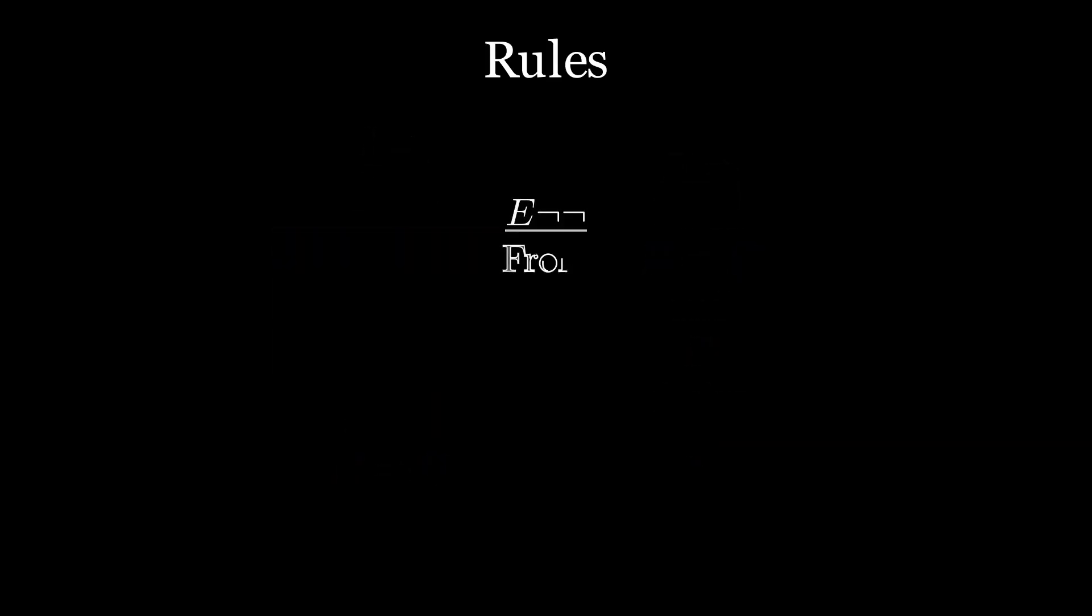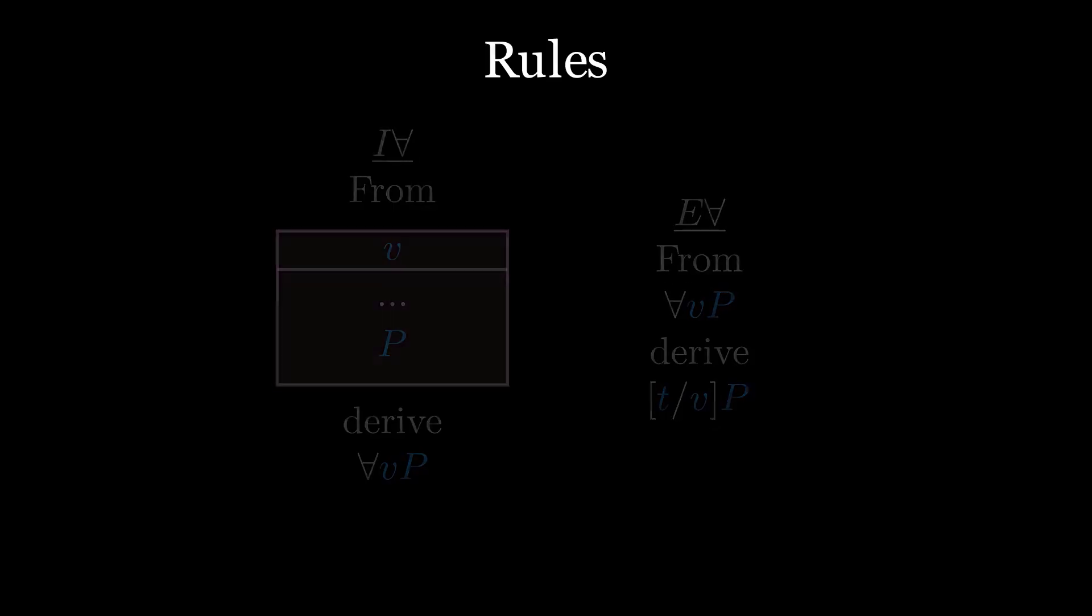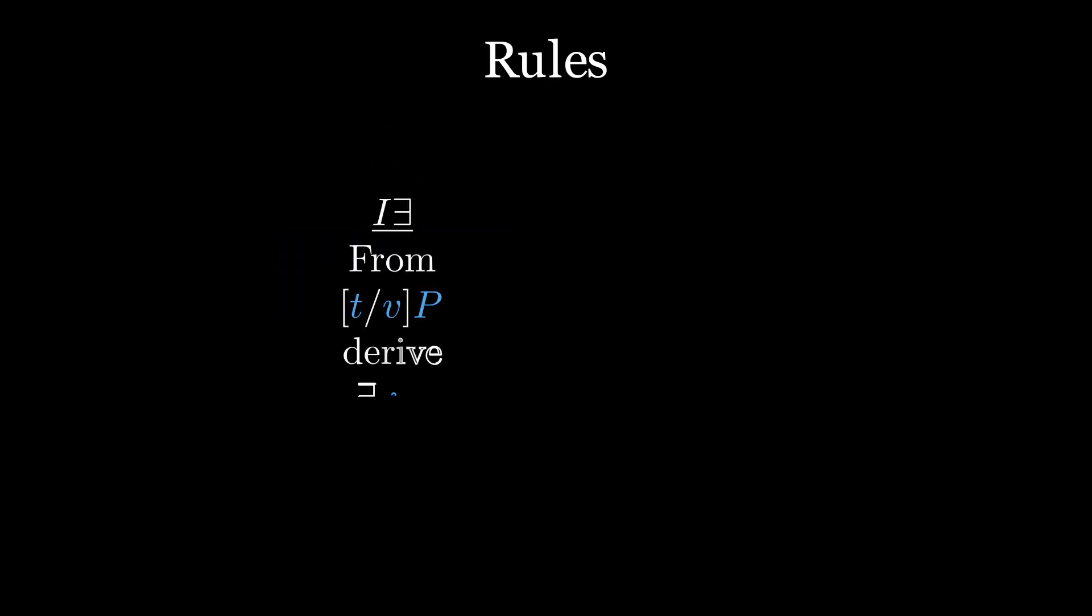We'll call the rule specific to classical logic, which allows us to eliminate double negatives, E not not. And the rest will give names more or less as expected with I for all, E for all, I exists, E exists, I equals, and E equals.